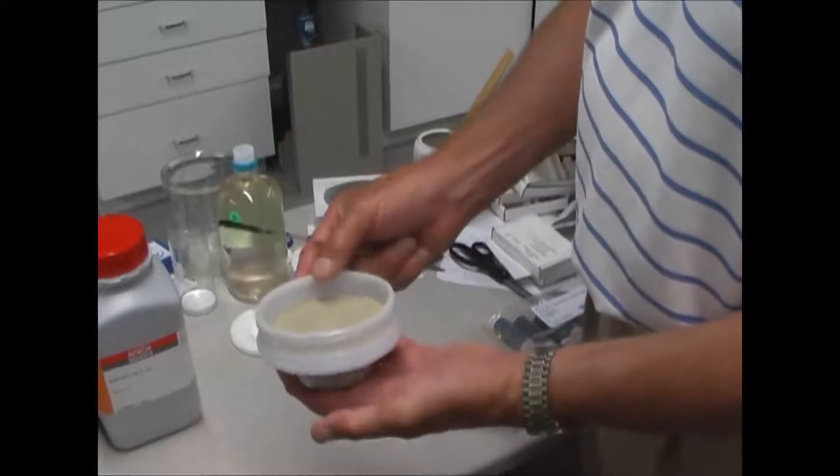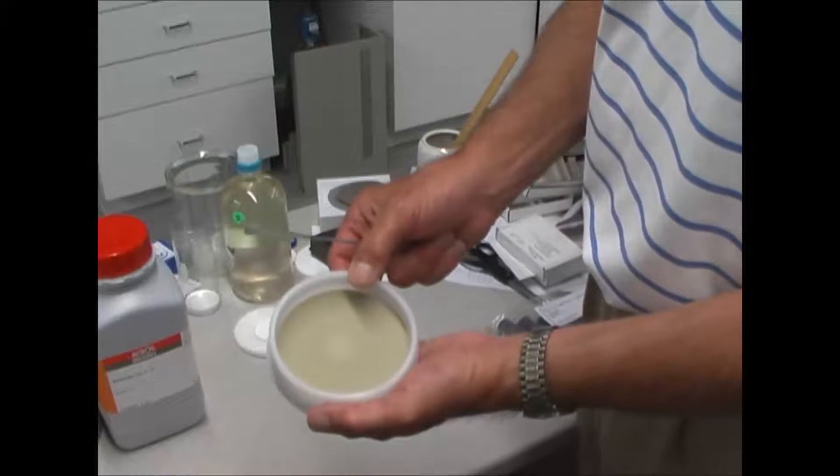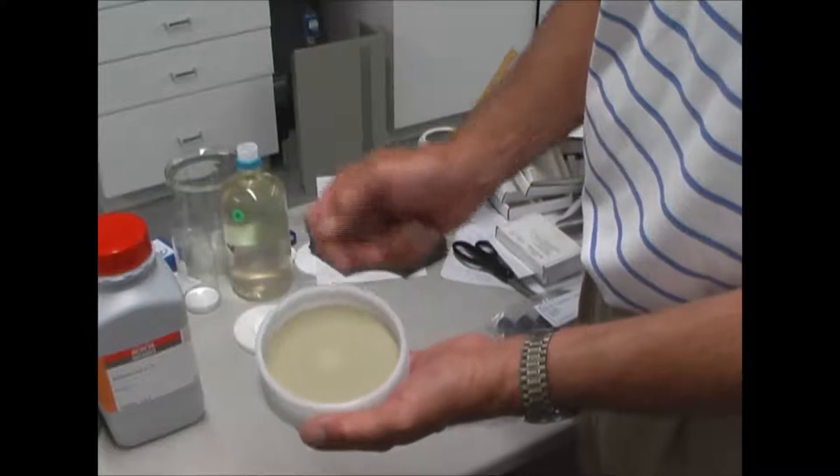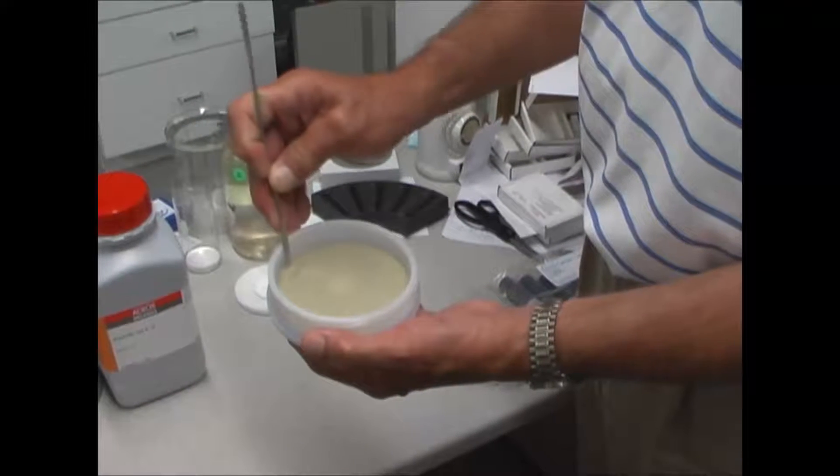So here's the disc holder that we used. Here's the pre-filter on the top. This is a five micron, and this is where we've collected most of the clay. What I'm going to do is lift the pre-filters out.